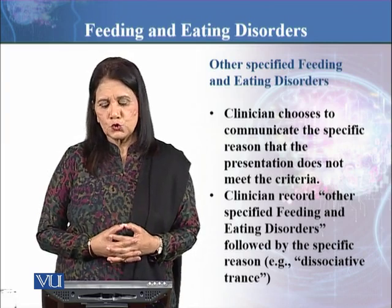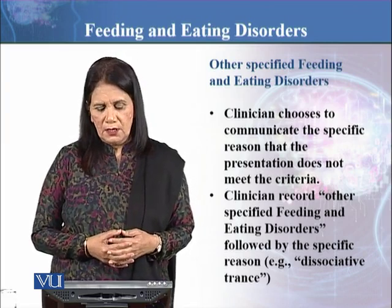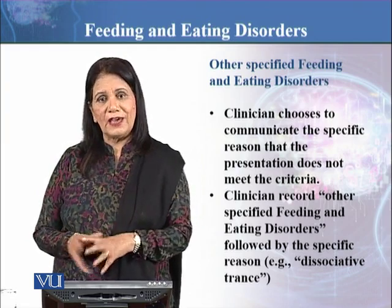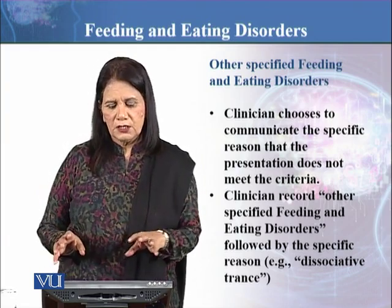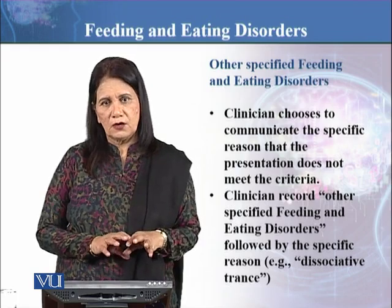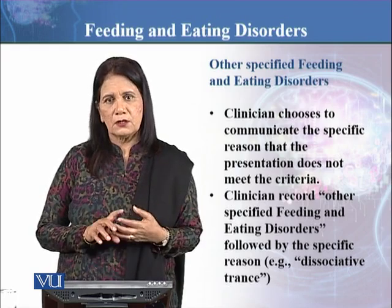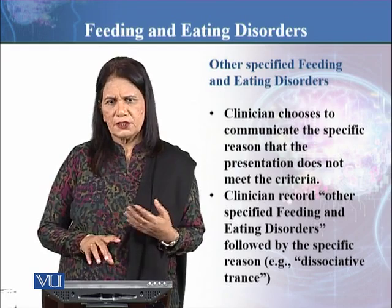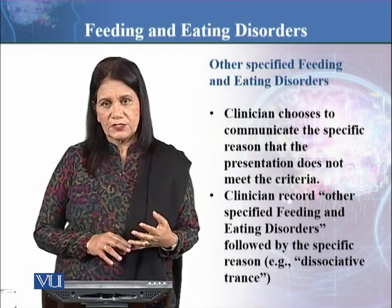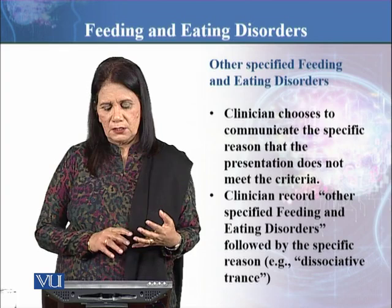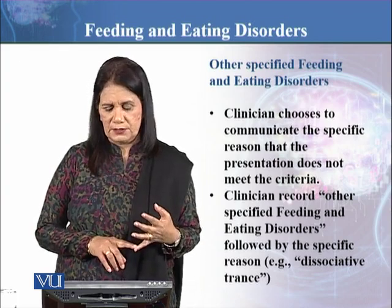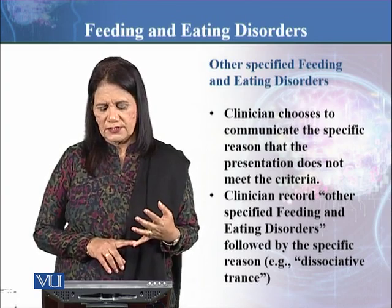In Other Specified Feeding and Eating Disorder, the clinician chooses to communicate the specific reason that the presentation does not meet criteria of any specific disorder. They spell out why it doesn't meet criteria — for example, of PICA, rumination, restrictive disorder, or any other disorder — and record 'Other Specified Feeding and Eating Disorder' followed by a specific reason, for example, dissociative trance.